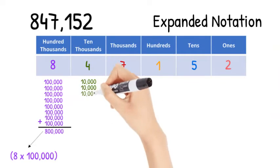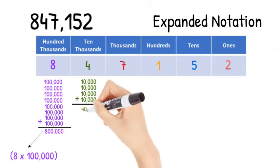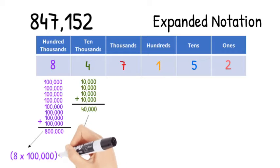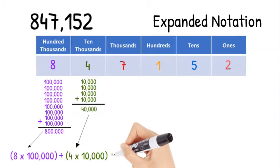Next, we want to add the value from our ten thousands place. Now, we know there are 4 ten thousands, so we will add 4 multiplied by 10,000.